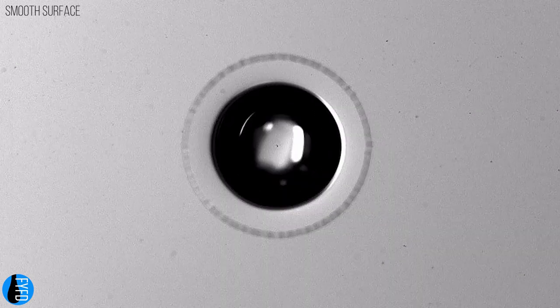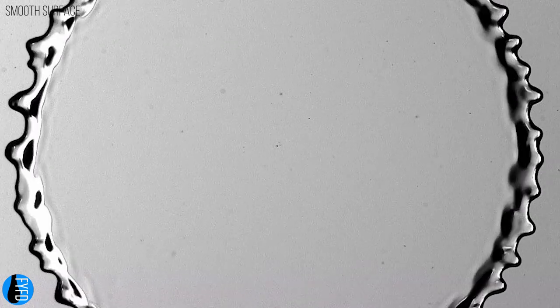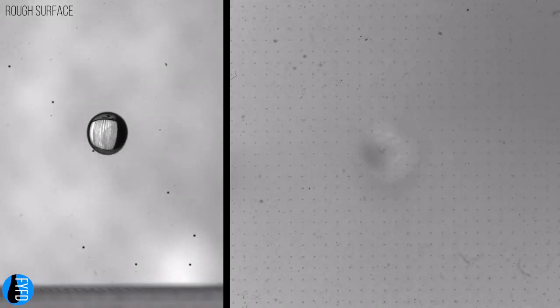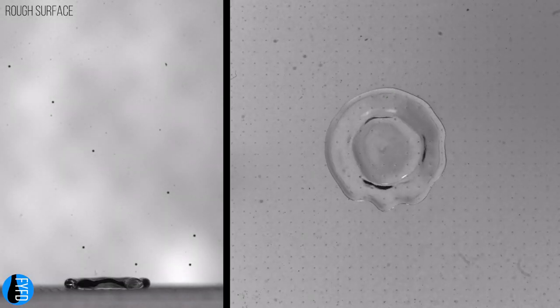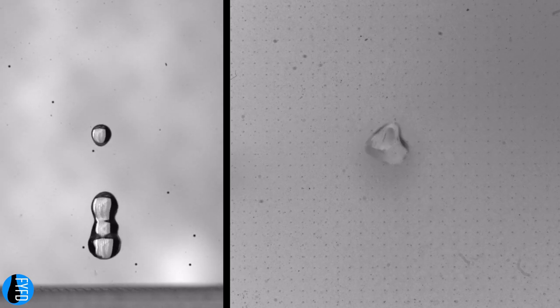The same principles hold for droplet impacts, too. On a smooth surface, the droplet spreads out and contacts a large area. But on the rough surface, the droplet's surface contact is minimized and it actually rebounds back off the surface.